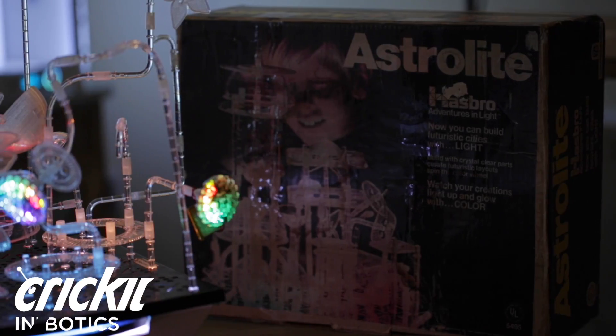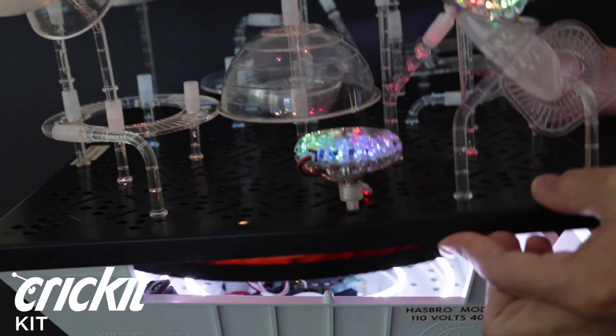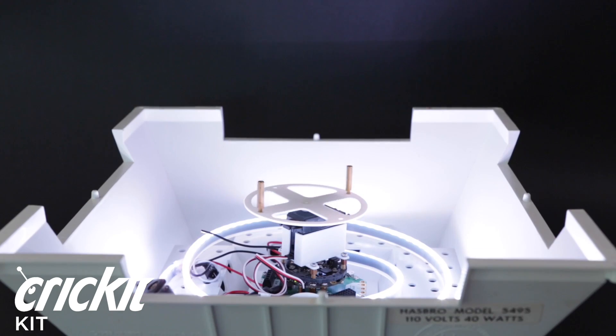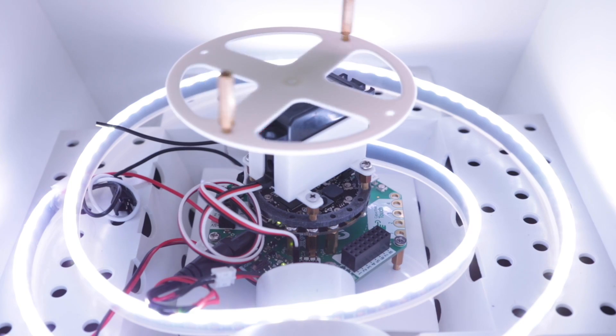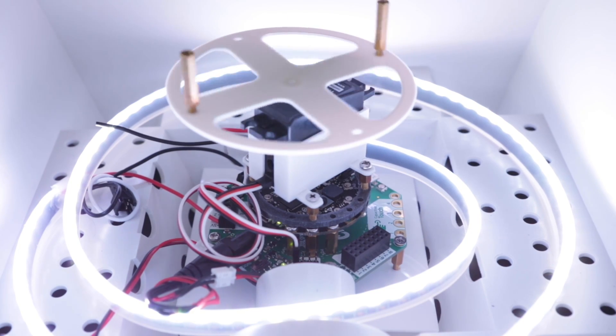The Adafruit Cricut is great for this project because it can drive NeoPixels, servos and lots of other sensors and components for building robots. The board and components fit inside the lightbox and are secured with 3D printed parts.